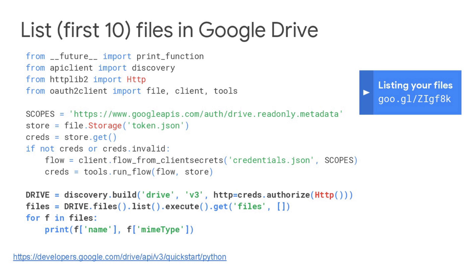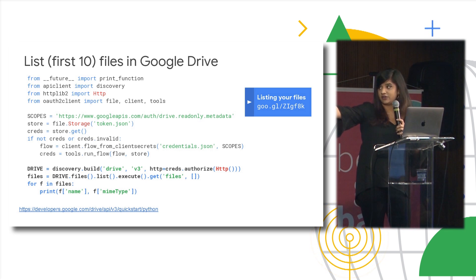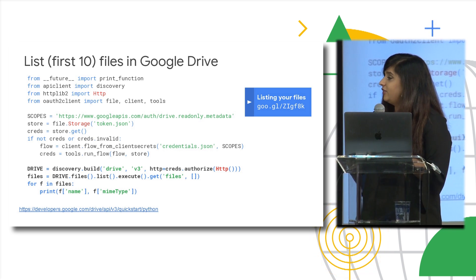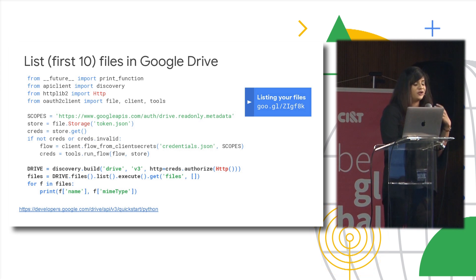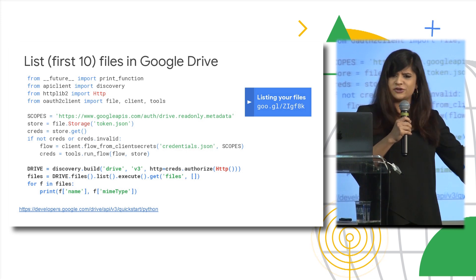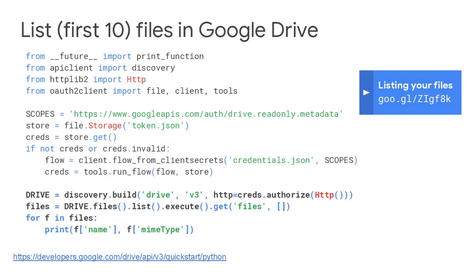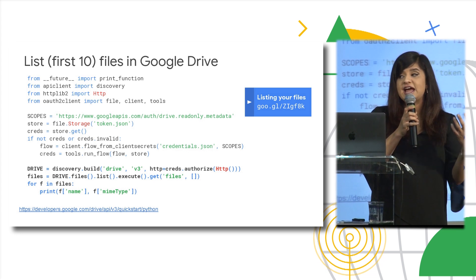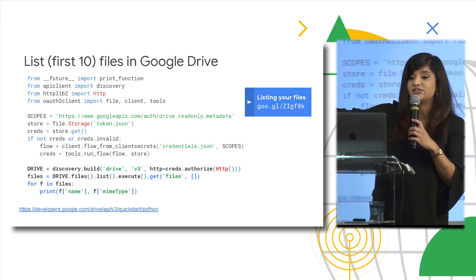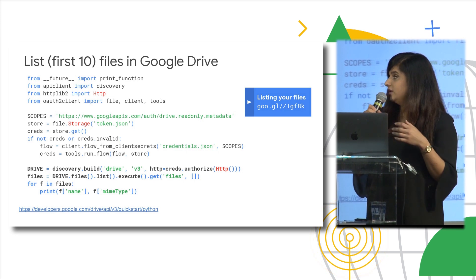This is a very simple quickstart on how to get authenticated and then list files in Google Drive. The first four lines are just our imports. Then we have our scope — do you ever get nervous when you're installing an app and it's asking for all of these permissions? We want to give you fine-grained access control so your users trust you more. This scope means we're only asking for the metadata attached to our Drive files, because this code only prints out the title — I don't even need the contents of the file.